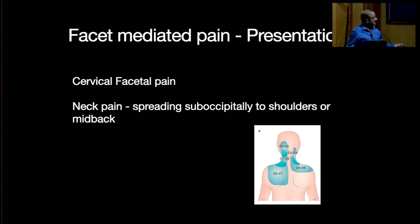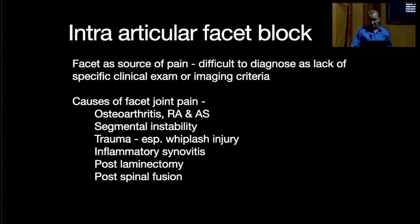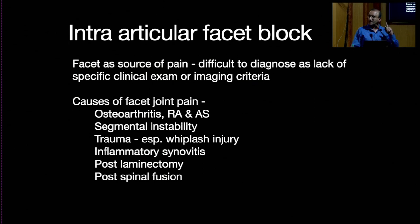In cervical facet pain, the pattern has been discussed — there is no radicular pain into the upper limbs. Intraarticular facet blocks are primarily diagnostic, not a great therapeutic option. Causes include osteoarthritis, rheumatoid arthritis, ankylosing spondylitis, segmental instability, trauma, inflammatory conditions, post-laminectomy, and post-spinal fusion. Many patients who have back pain after fusion have facet joint pain — please think about facet as a source and at least do a diagnostic block.